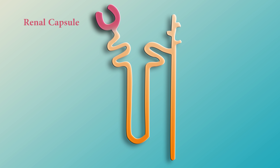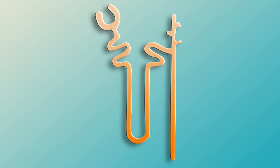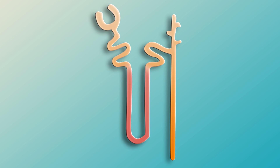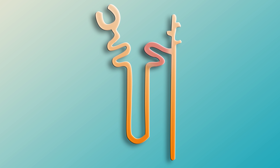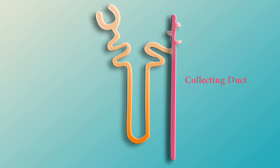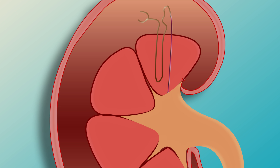Each nephron begins as a cup-shaped structure called the renal or Bowman's capsule, found in the cortex of the kidney. From the renal capsule, the tube runs toward the center of the kidney, first forming a twisted region called the proximal convoluted tubule, then making a long hairpin loop in the medulla called the loop of Henle. The tubule then turns back up through the cortex, forming another twisted region called the distal convoluted tubule. Finally, it joins a collecting duct which leads down through the medulla and into the pelvis of the kidney.